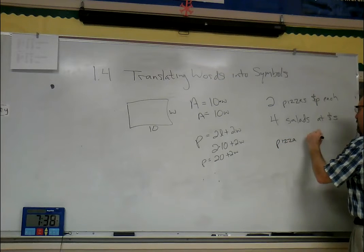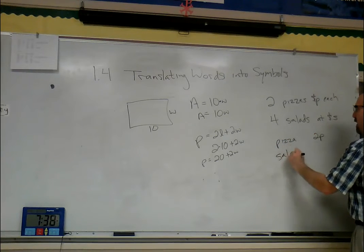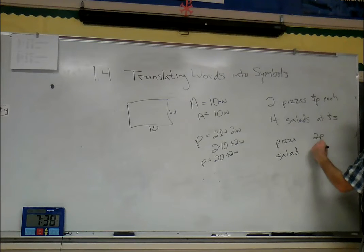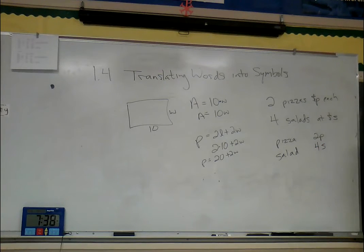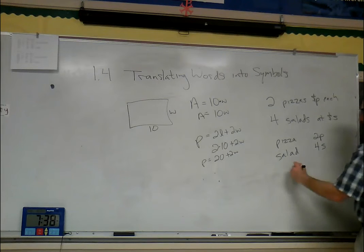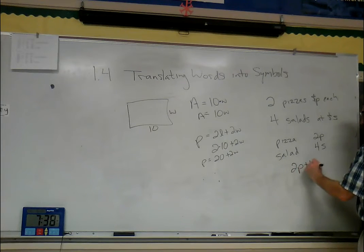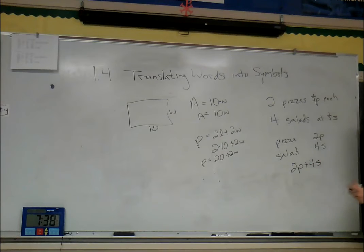Salads are S dollars, and we bought four of them, so 4S. We find out how much we spent total by adding them together: 2P plus 4S. Technically, that's another word to put under addition - 'total' is often found by adding them all up.